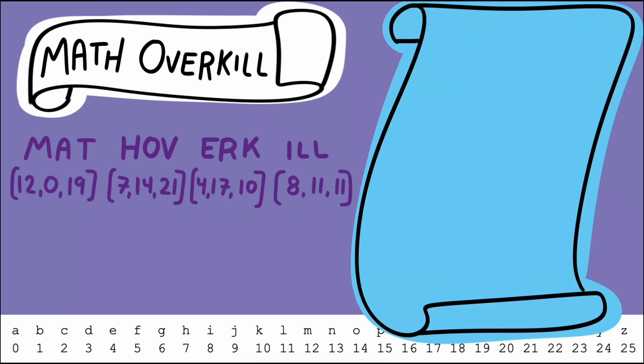So mat would become 12, 0, 19; hov 7, 14, 21; erk 4, 17, 10; and ill 8, 11, 11. Now our encryption needs a secret key we can use to encrypt these blocks.